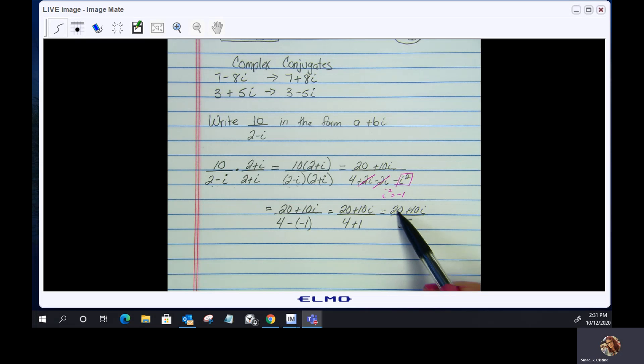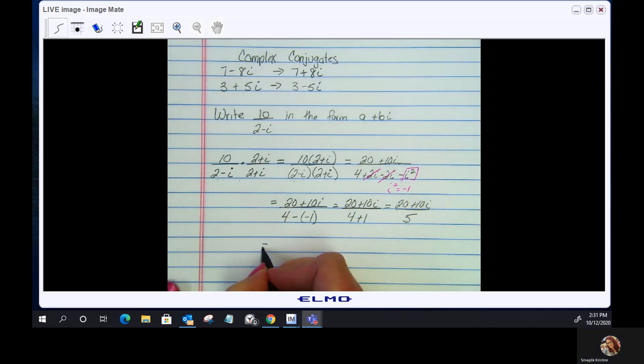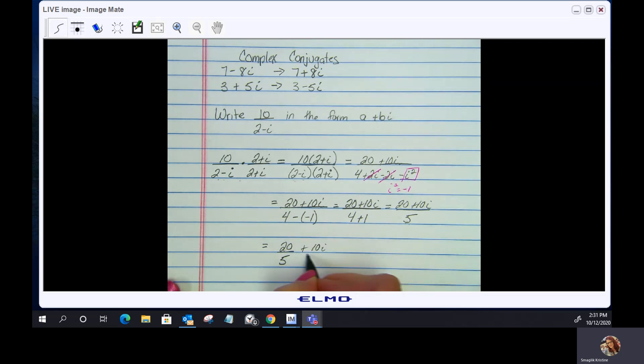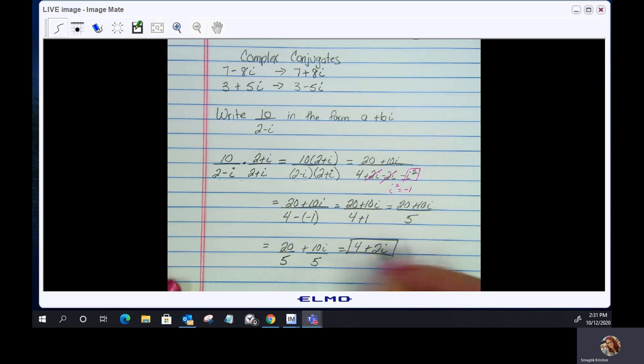We cannot just reduce one term. We have to do it to both. This is the same as 20 divided by 5 plus 10i divided by 5. Let's simplify: 20 divided by 5 is 4, plus 10i divided by 5 is 2i. Now we are in that form a plus bi.